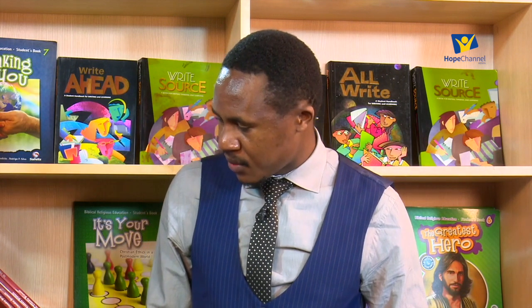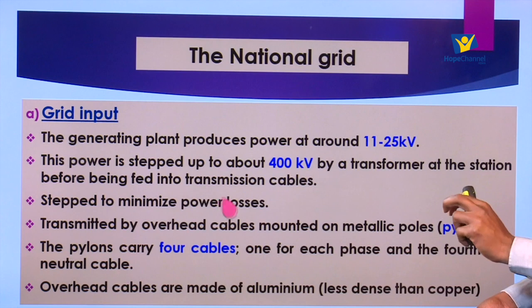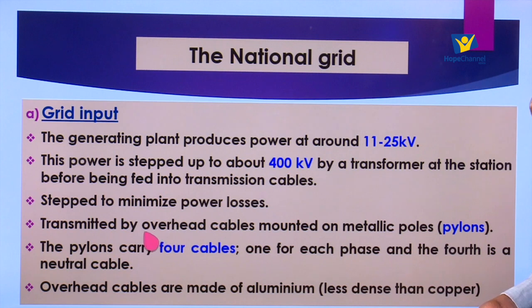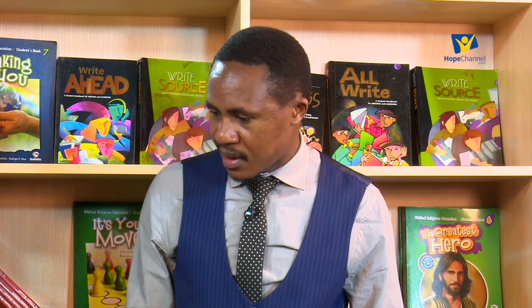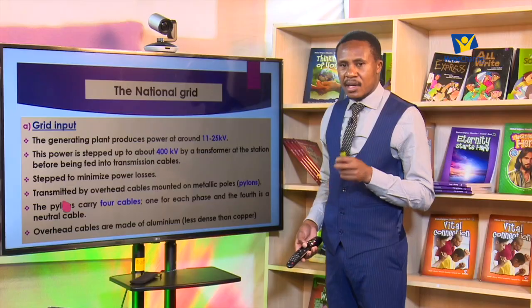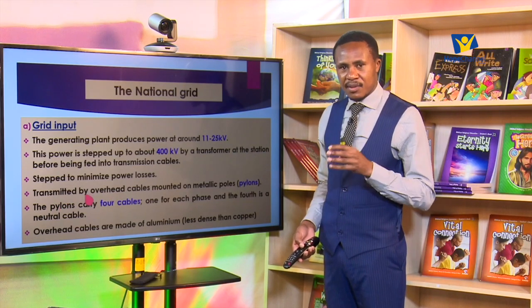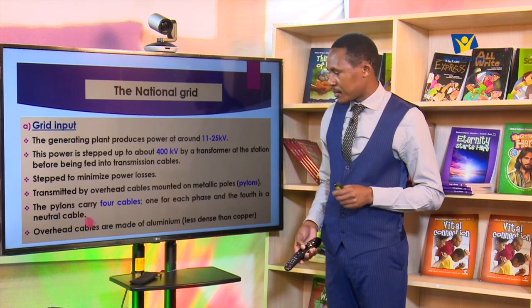The overhead cables on the pylons are made of aluminium because aluminium is less dense than copper. We use aluminium because it is a very good electrical conductor, meaning it has very low resistance so current can easily flow through. In the process of transmission, if resistance is kept low the power loss is minimized. There are two reasons for using aluminium: number one, it is a very good electrical conductor; number two, it is less dense, making installation easier.